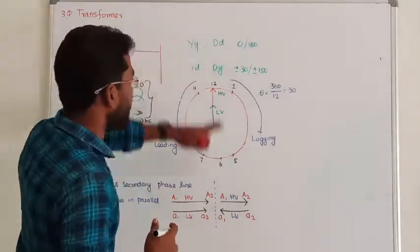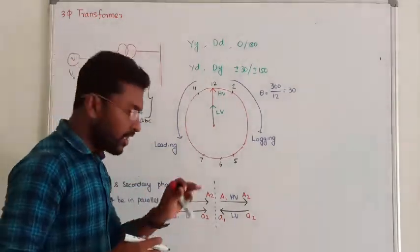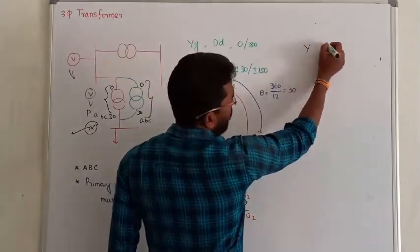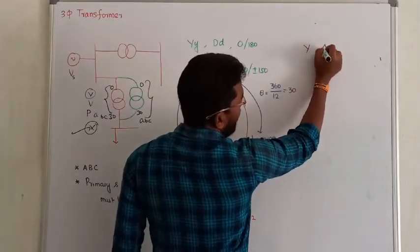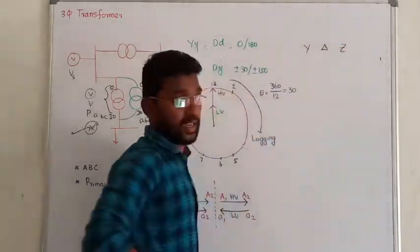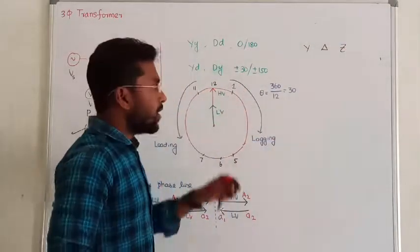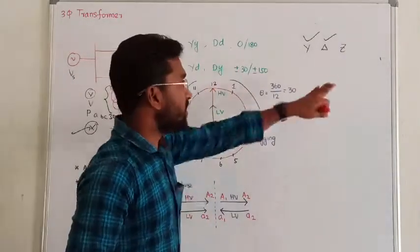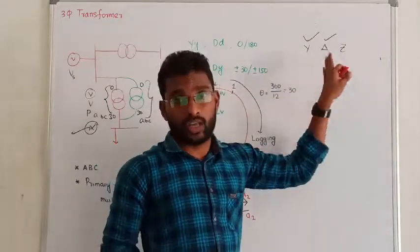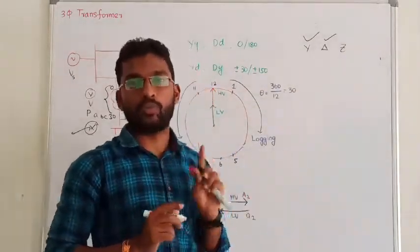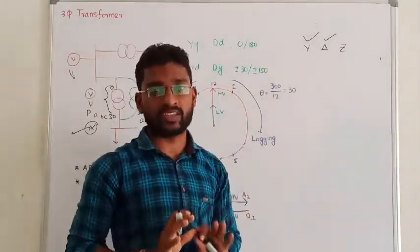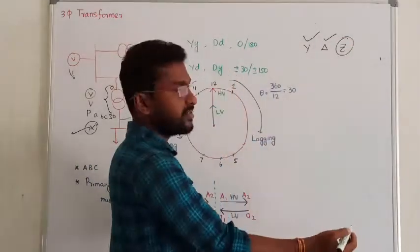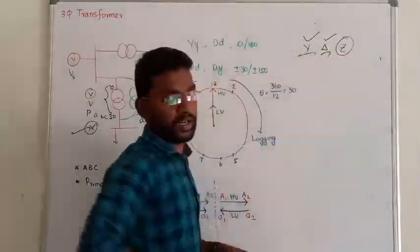Next, let us see the various combinations. Usually in three-phase, there are three connections: star, delta, and zigzag. We are going to discuss only star and delta. For zigzag, you can refer to J.P. Gupta's Electrical Machines. We are going to see only star and delta.